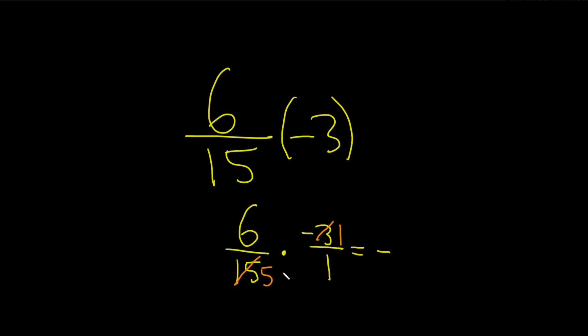And now you see that nothing else can really be reduced. So now we just multiply straight across. 6 times 1 is 6 over and then 5 times 1 is 5.